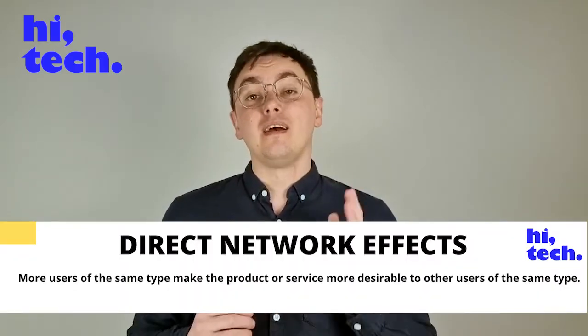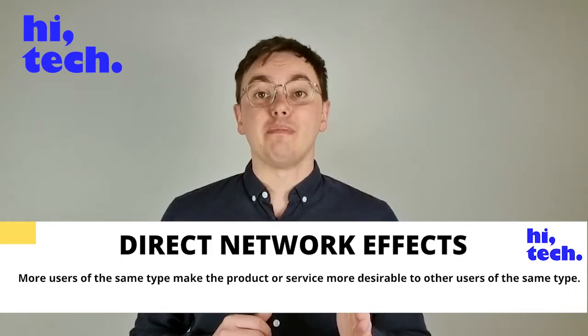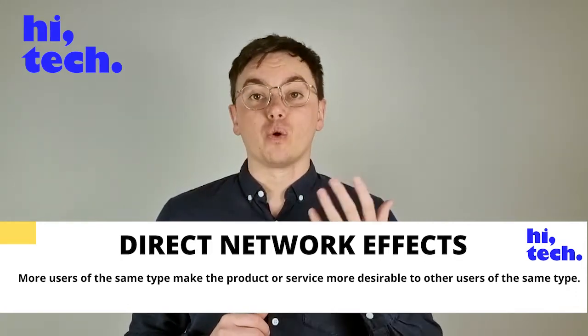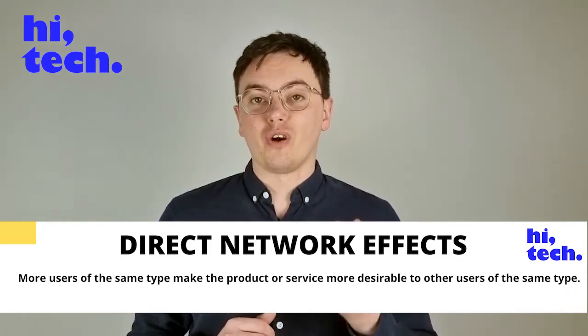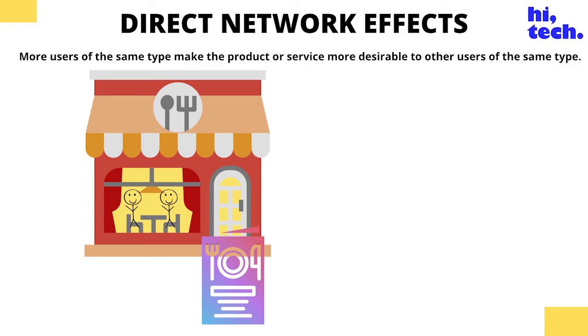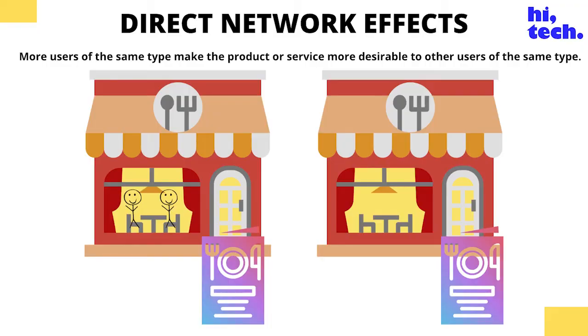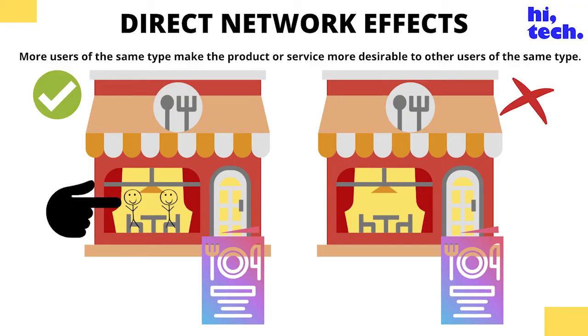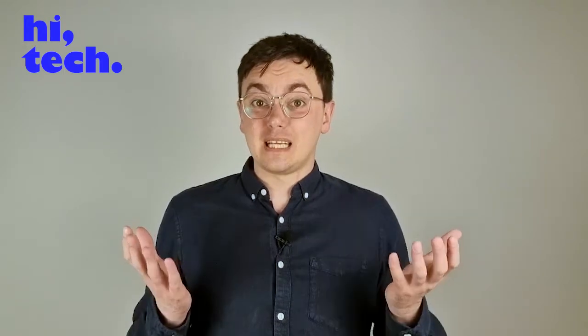Direct network effects mean that more users of the same type make the product or service more desirable to other users of that same type. You know how when you go to a pretty empty restaurant they ask you to sit by the window? All the studies show this makes it more likely for other people to come in. If there are two equally good restaurants with very similar menus, people will choose the one that already has some people inside.